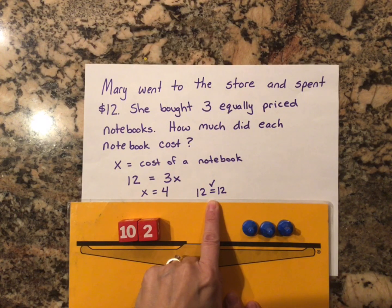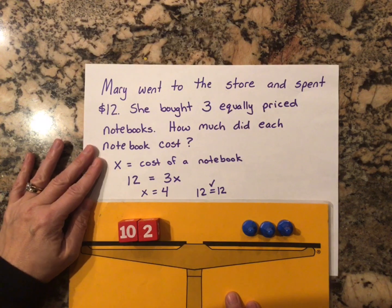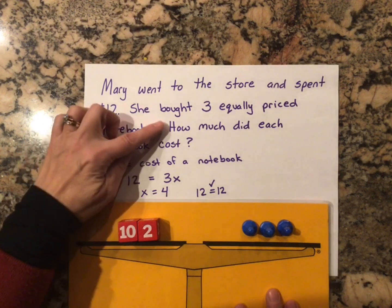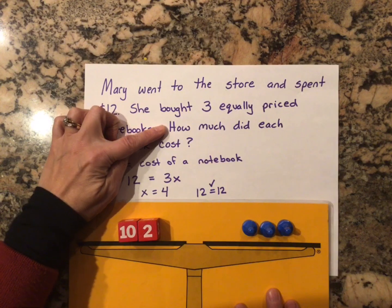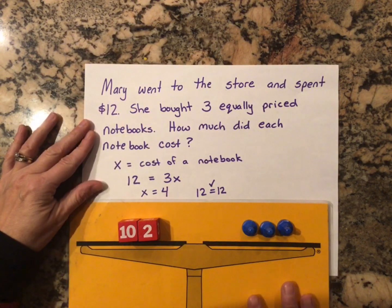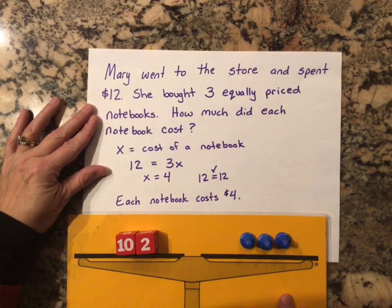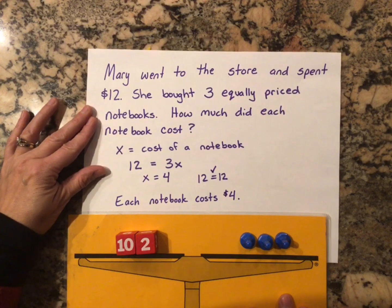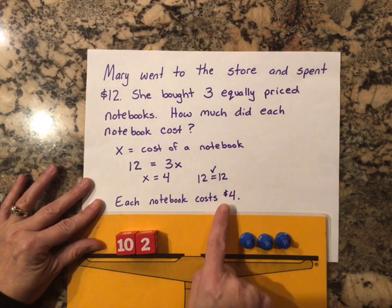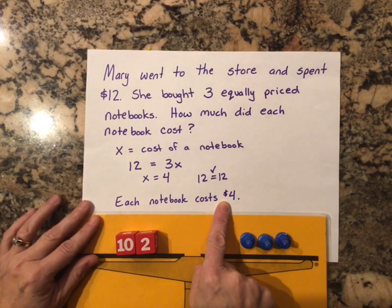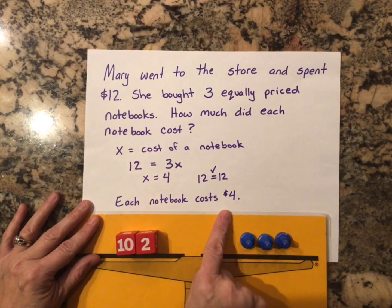The last step after checking my work is to write a sentence with a label to answer the question. The question was how much did each notebook cost, so my sentence is: each notebook costs $4. The label is dollars because we were trying to find cost and we were dealing with money in the problem. Now it's your turn to give Hands On Equations Verbal Problems a try.